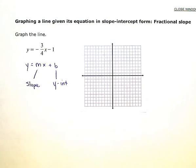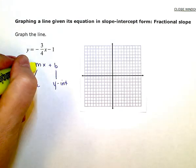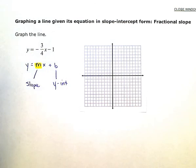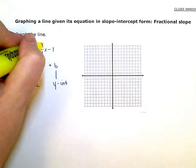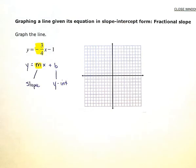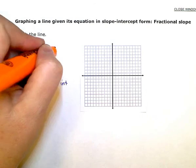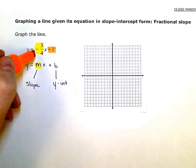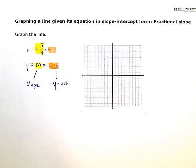So if I look at my line here, the slope or the coefficient to the x in this equation is the negative 3 fourths. And the y-intercept, the constant term, or the number not in front of the x or next to the x, is the negative 1.